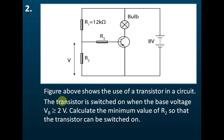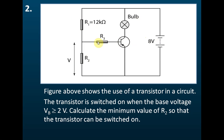Now let's see question two. The figure shows the use of a transistor in a circuit. In this circuit we have a transistor, a bulb, a battery, and three resistors. Two of these resistors act as a potential divider, which shares the 8 volts according to their resistance — the higher the resistance, the higher the voltage across it. This potential divider is used to control the voltage across the base circuit and hence control the collector circuit.